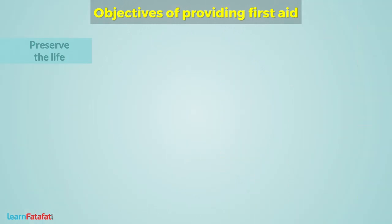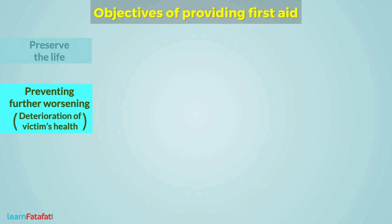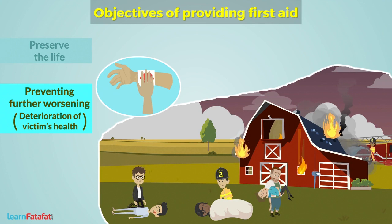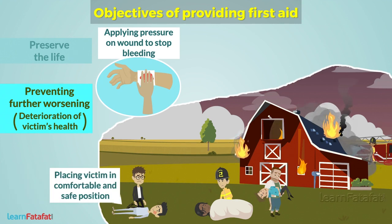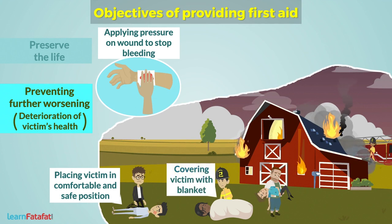The second P of First Aid is preventing further worsening or deterioration of the victim's health. Various First Aid techniques should be applied to prevent worsening the condition of the casualty. This covers techniques such as applying pressure on a wound to stop bleeding, preventing further injuries, and placing the victim in a comfortable and safe position, or covering the victim with a blanket.